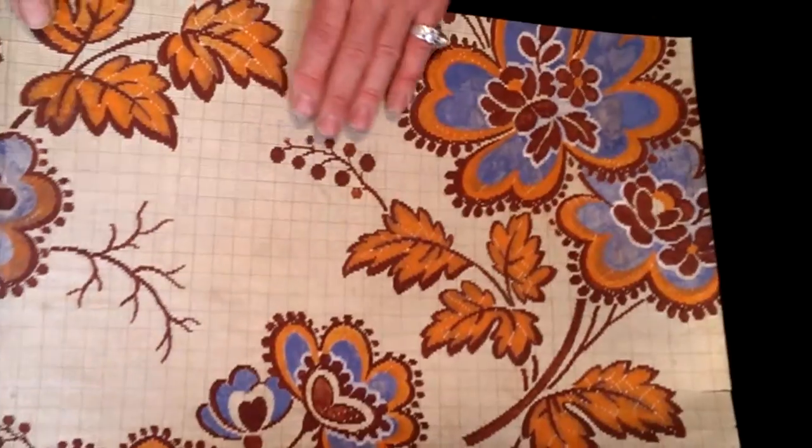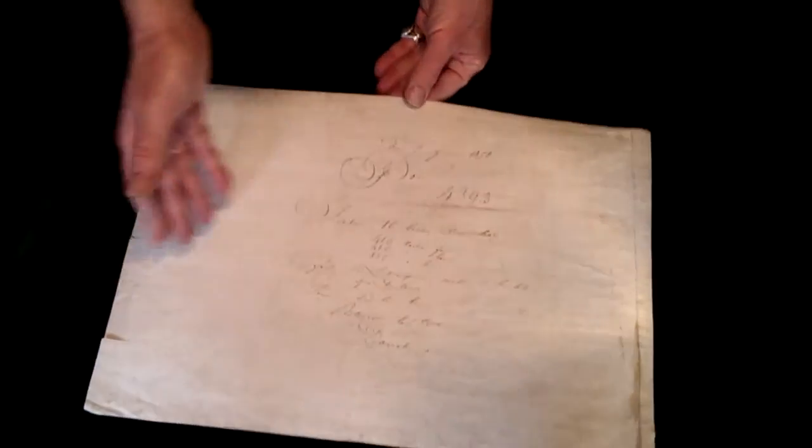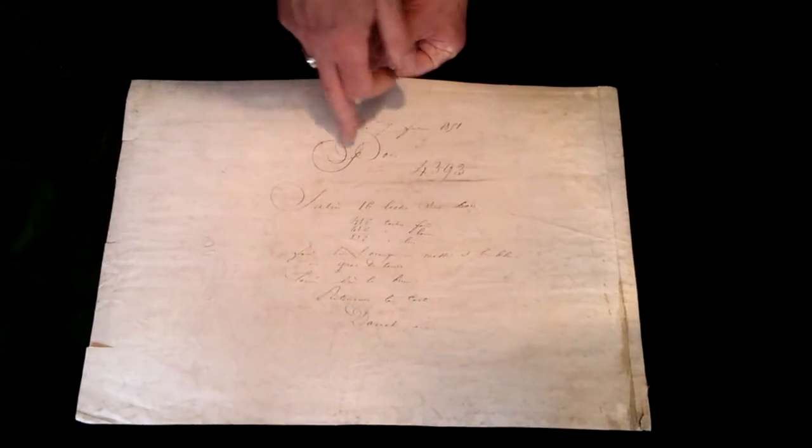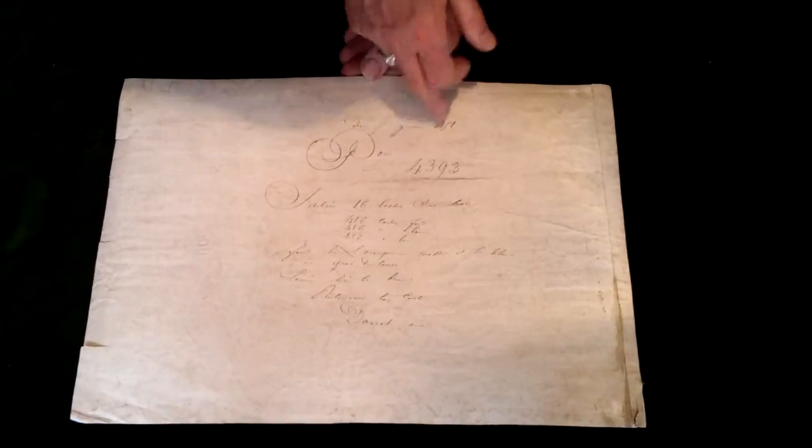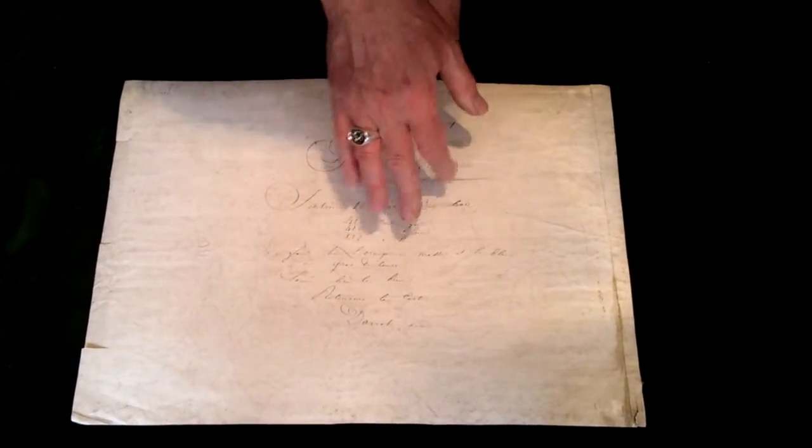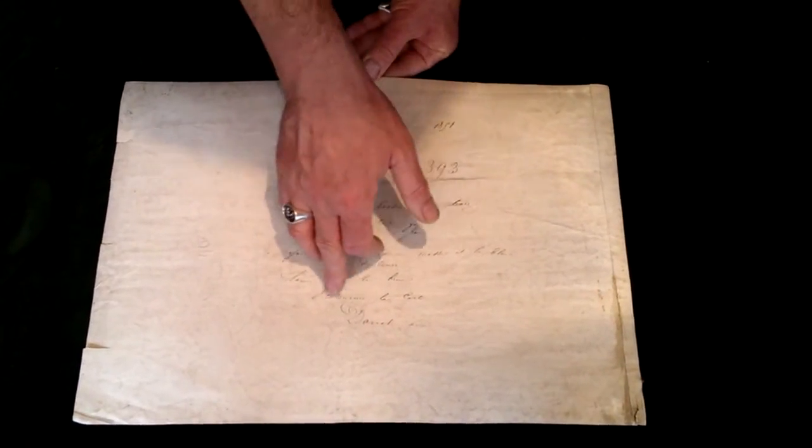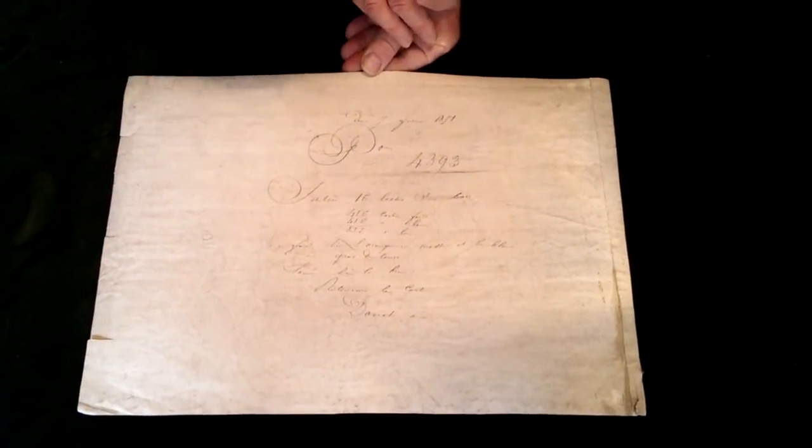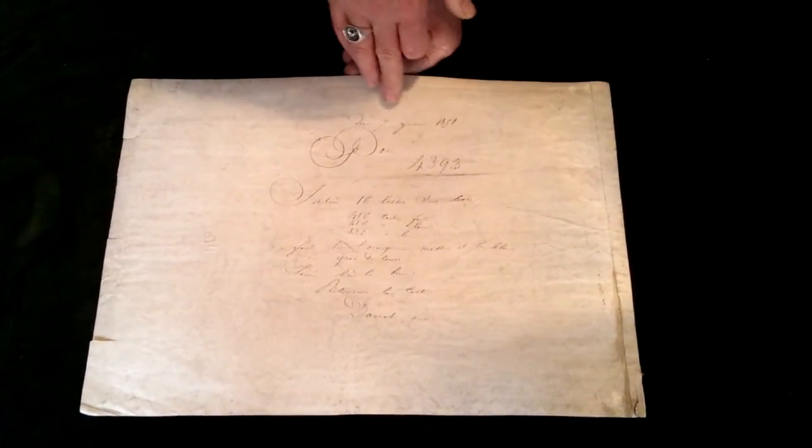It dates from 1851, fully described on the back in writing. It gives the pattern number from the factory, the number of threads and cords per square. There's the name of the company, Donat and Company...